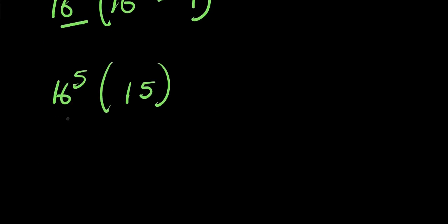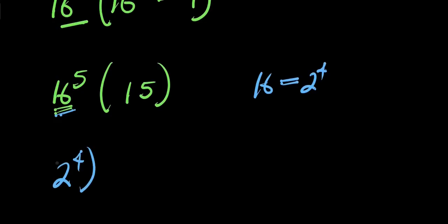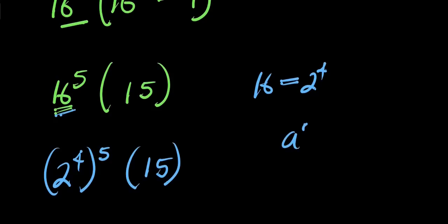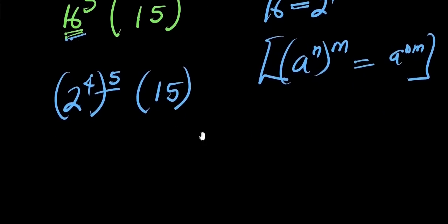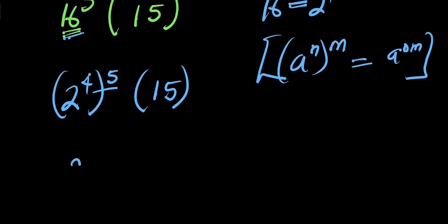We need to find the value of 16 power 5 times 15. We express 16 as 2 power 4, so this becomes (2 power 4) to the power of 5 times 15. Applying the rule a power (n times m) equals a power nm, we multiply 4 times 5 to get 20, giving us 2 power 20 times 15.